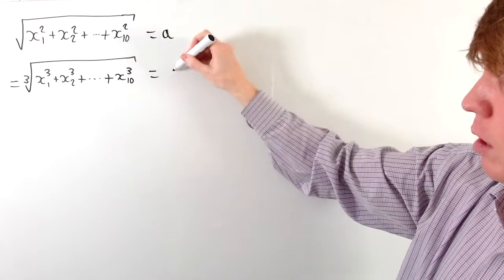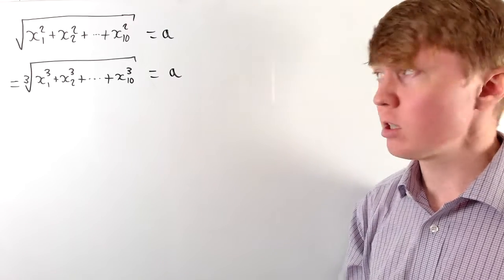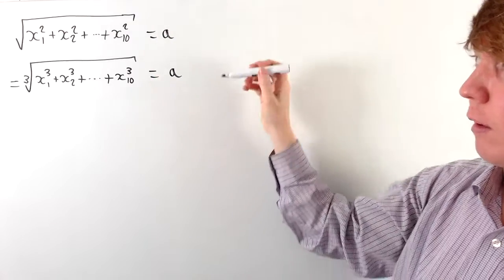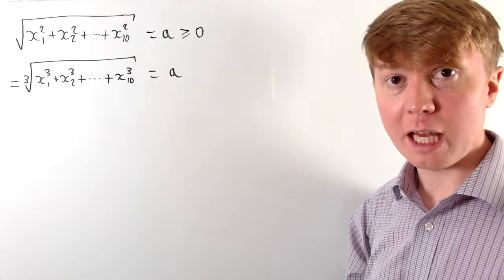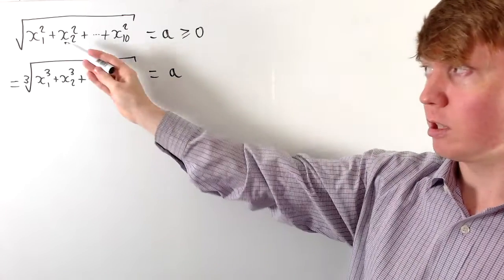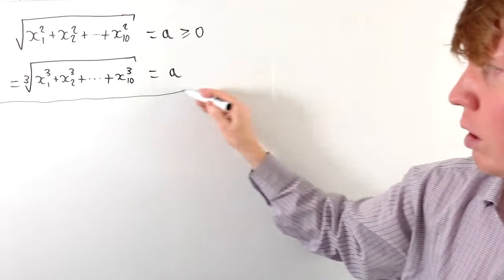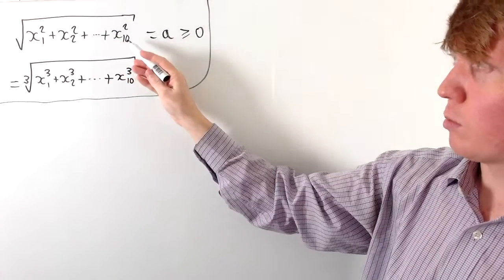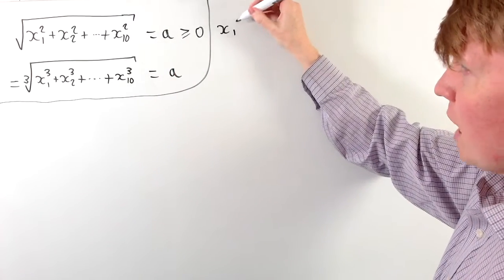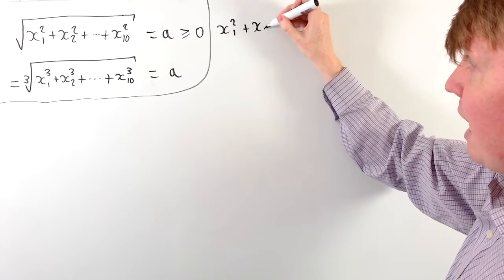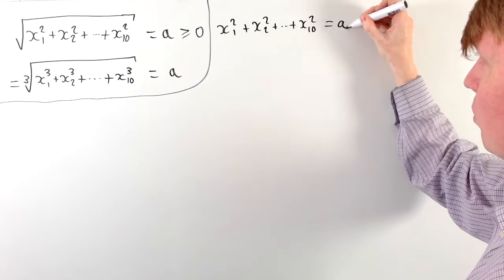This will help us when we do some algebraic manipulation to extract more information from the equations. You can see that a is equal to the square root of something, so a is greater than or equal to zero. Even though we've got a cube root which could be negative, because this has to equal the square root, a has to be non-negative. Taking the square root equation and squaring both sides gives us x1 squared plus x2 squared up to x10 squared equals a squared.